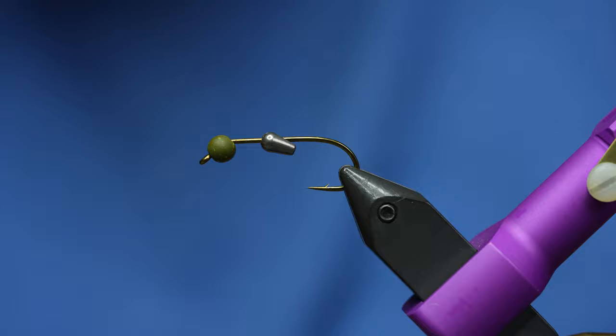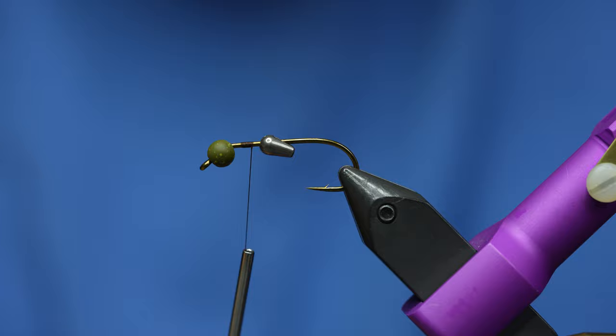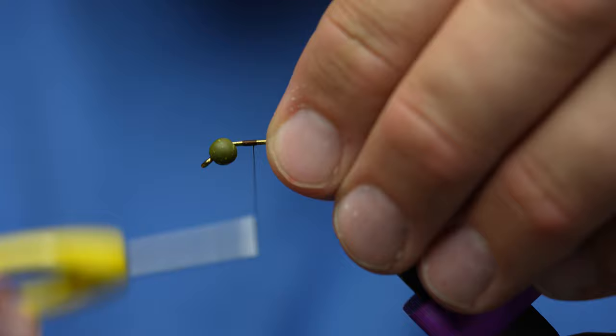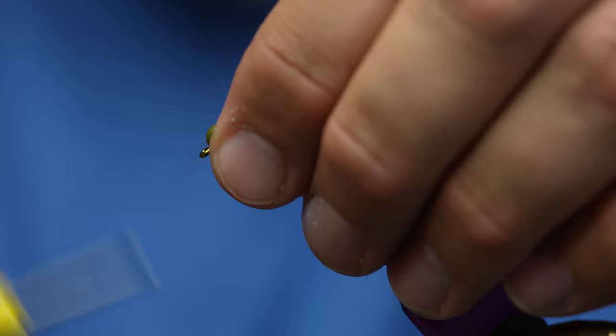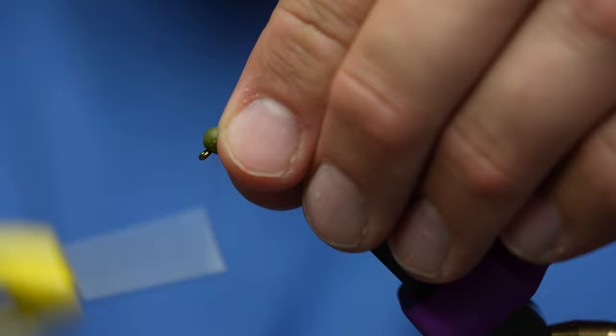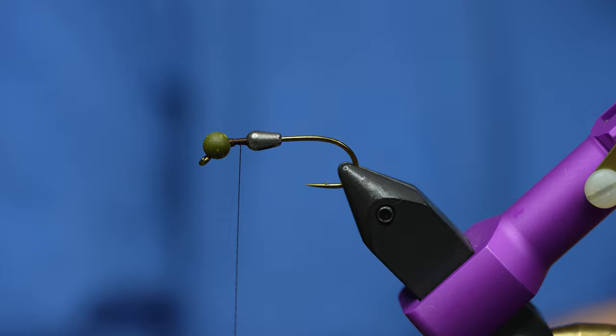First thing we're going to do is start our thread and get the weight situation dialed. I'm going to start with my thread right in front of that body and get it so that when I slide that body over the thread it kind of wants to stick. Right there - that's sticking pretty well. Then I'm going to come up here and use a bunch of thread to mash that bead in place and get it to sit right where I want. This is probably the most difficult part of the fly.